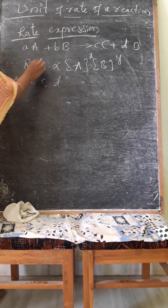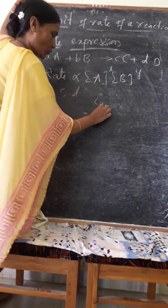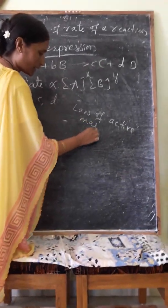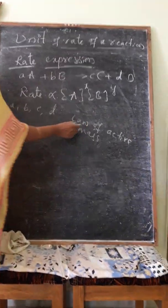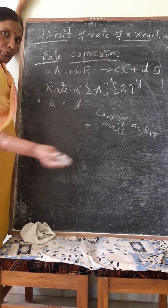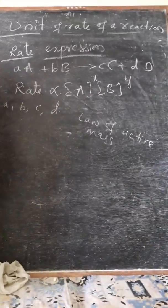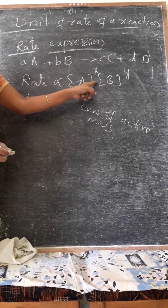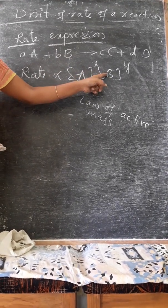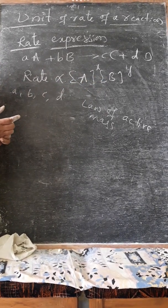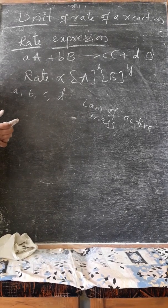In the rate expression, there is one law that is called the law of active mass. The law of active mass says rate is directly proportional to product of molar concentration of the reactants at any particular temperature.